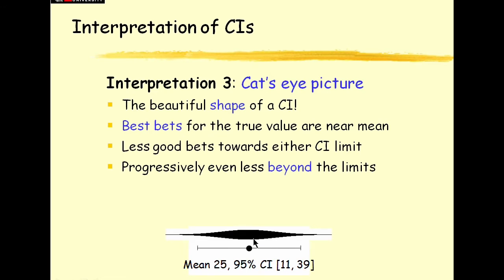But this confidence interval, this cat's eye picture, indicates that round about the middle is our best bet.